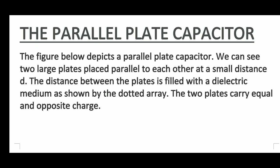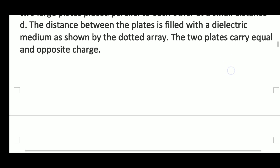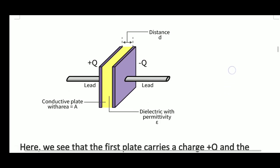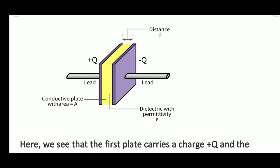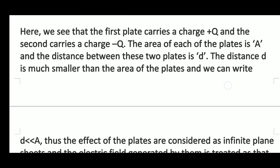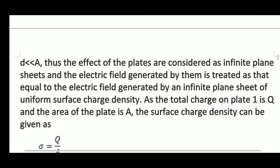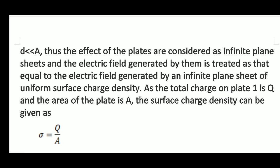The two plates carry equal and opposite charges. In this diagram, both plates have charges plus Q and minus Q, the distance between them is d, the area of the plates is A, and the medium kept between the two plates is a dielectric with permittivity epsilon.